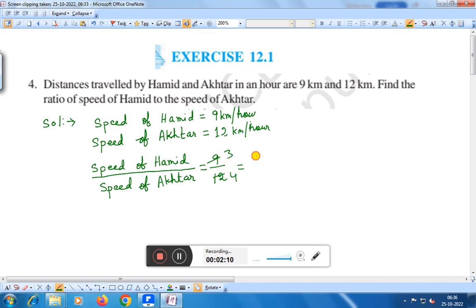It comes to 3 by 4, or you can write it as 3 is to 4. Right? So the ratio of speed of Hamid to the speed of Akhtar is 3 is to 4.